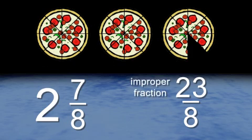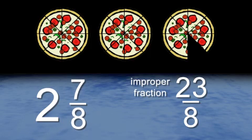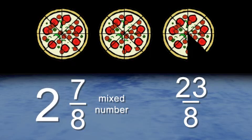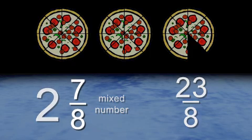This is called an improper fraction, because the numerator is bigger than the denominator. Usually the numerator is smaller than the denominator. Two and seven eighths is called a mixed number, because you have a regular number mixed with a fraction.